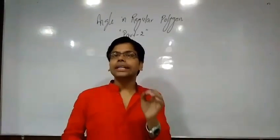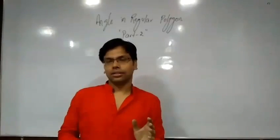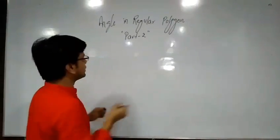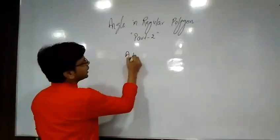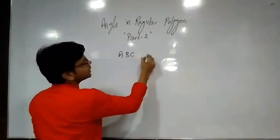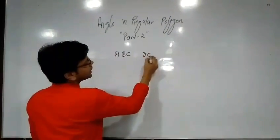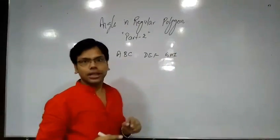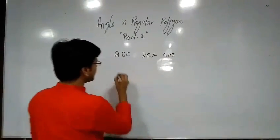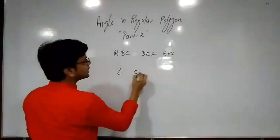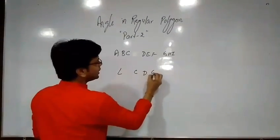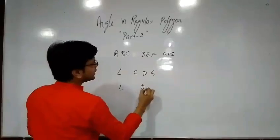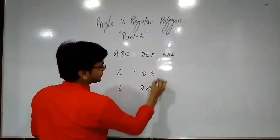We need to find the angle in a regular polygon. A, B, C, D, E, F, G, H, I is a regular polygon and we need to find Angle CDG and Angle DAG.